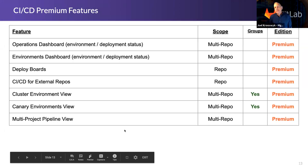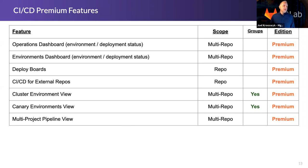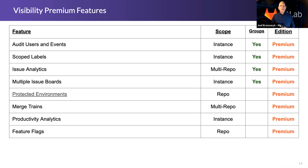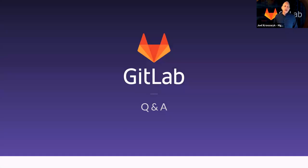To wrap up, we talked about the operations dashboard, the environments dashboard, deploy boards, and CI/CD for external repos. We also touched on visibility features in GitLab Premium: auditability, scoping of labels, analytics around issues, multiple issue boards, merge trains, productivity analytics, and feature flags. There's a lot of additional functionality worth exploring with GitLab Premium. With that, let's stop and look at the Q&A.